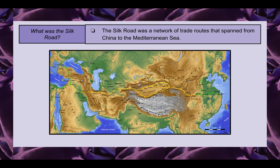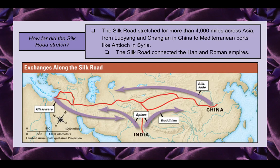So what was the Silk Road? The Silk Road was a network of trade routes that spanned from China to the Mediterranean Sea, which we can see on this map. It stretched more than 4,000 miles across Asia, from Luoyang and Chang'an in China to Mediterranean ports like Antioch in Syria — all the way across China to the Mediterranean Sea.